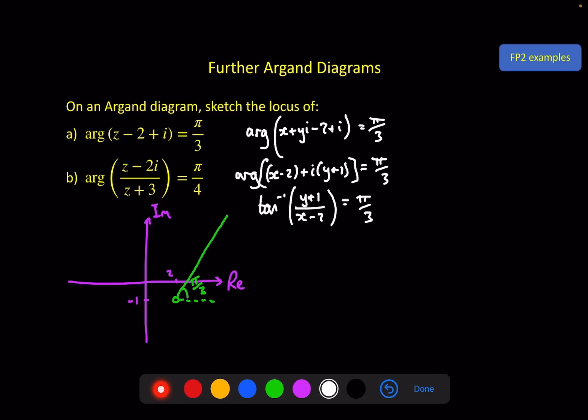So inverse tan of (y + 1) over (x - 2), and we're told that must equal pi by 3. Now I can take the tan on the other side, do the tangent of pi by 3, which is the square root of 3. And then just rearrange what we've got left to find our line equation in its usual form.